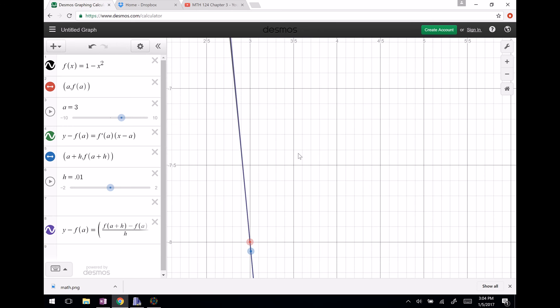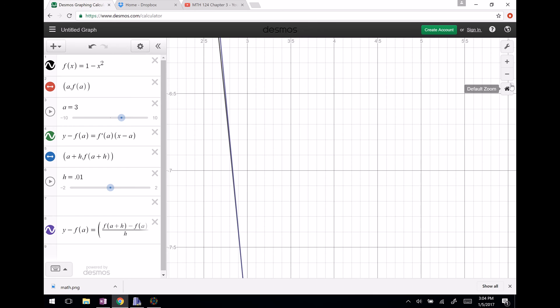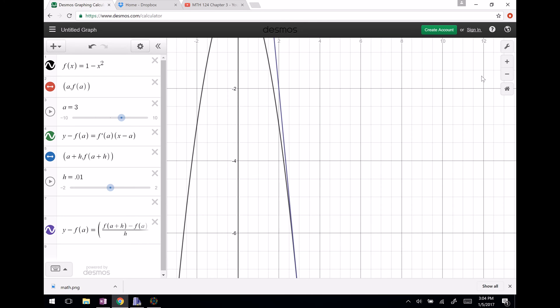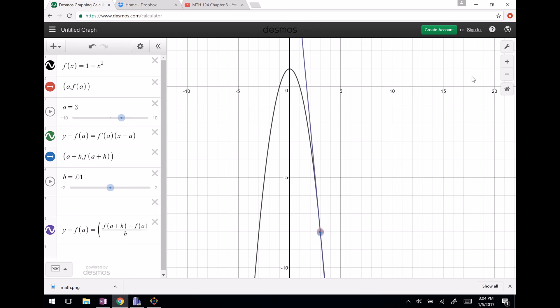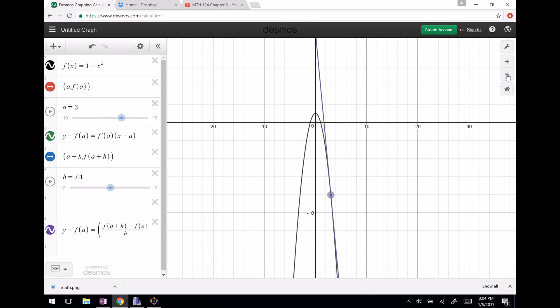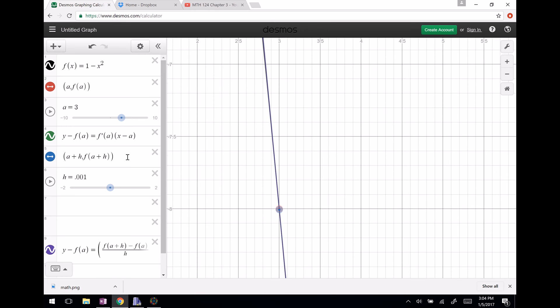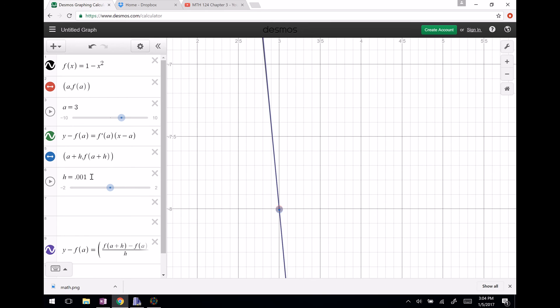This purple line right here is doing a great job of approximating that green line. That green line is the instantaneous rate of change, or the slope at the point, so this purple line and this green line are basically right on top of each other. In part b, we did .001, and now they're very, very close. I mean, essentially they are right on top of each other. Again, you can't really let h be equal to zero, that won't work out, but when h is very, very close to zero, the purple line and the green line are right on top of each other.